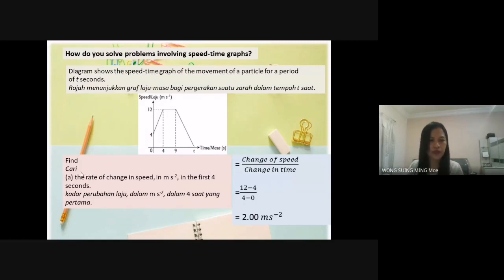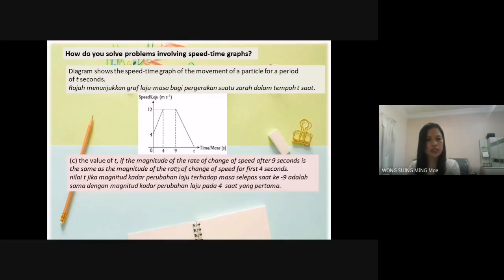So this means that acceleration after 9 seconds is equal to acceleration for the first 4 seconds. We already found the rate of change of speed in first 4 seconds is equal to 2. So here the rate is 2.